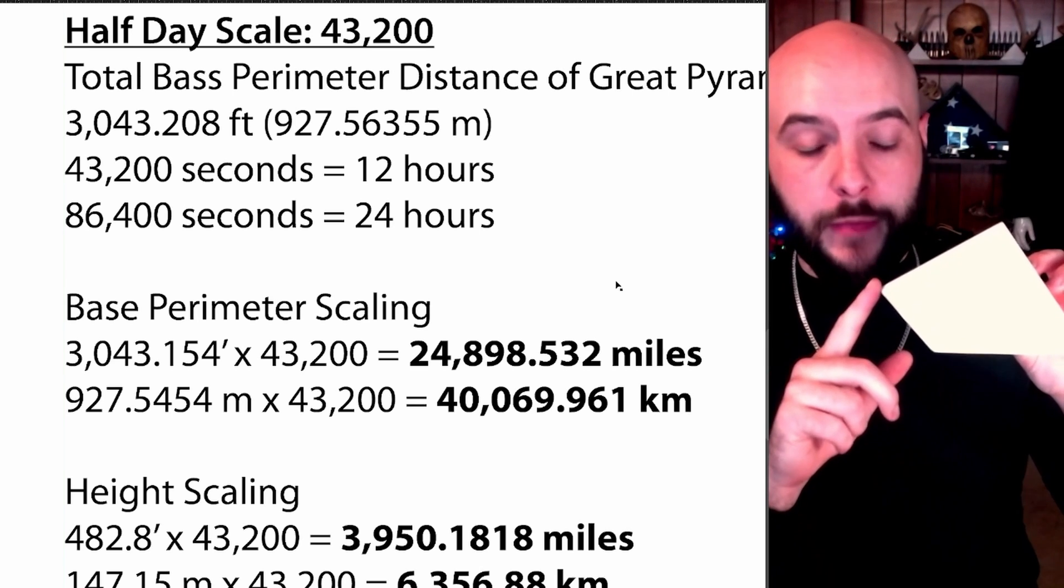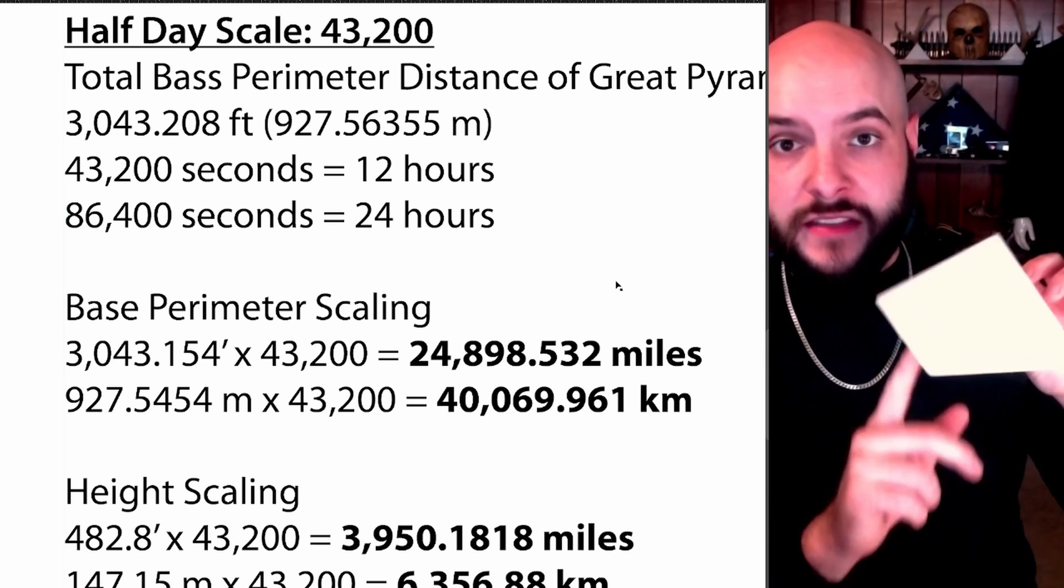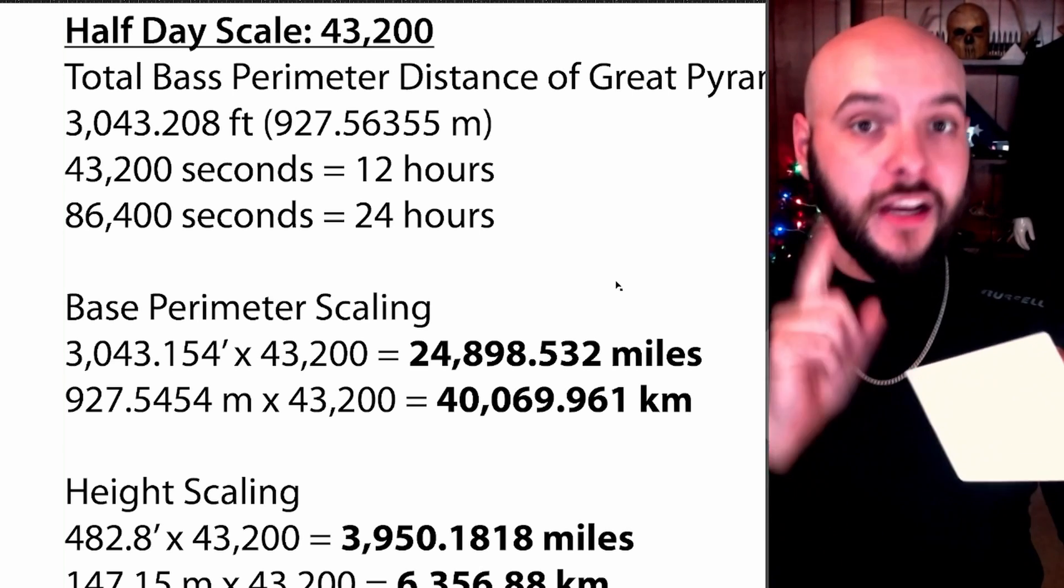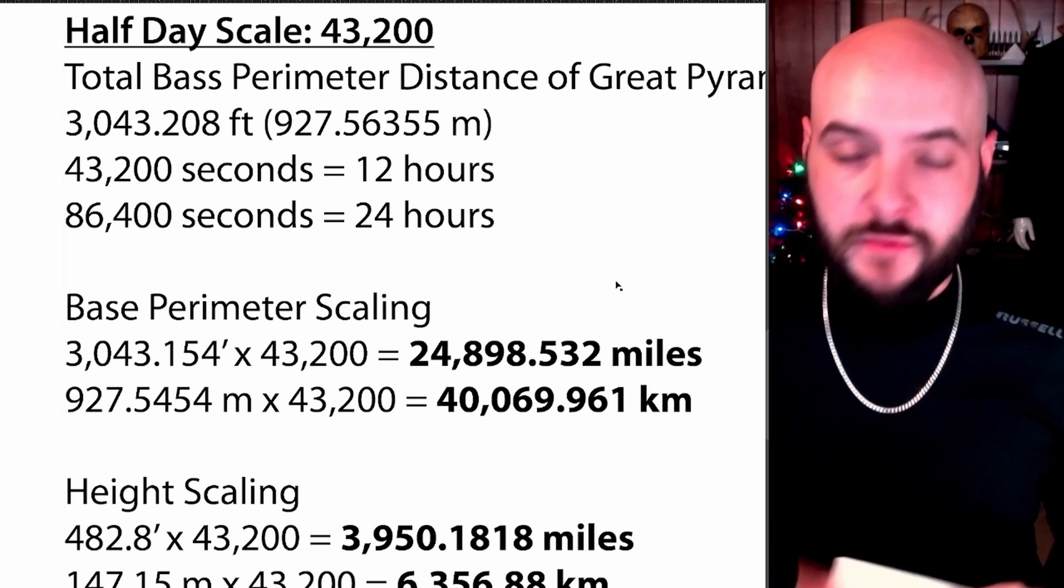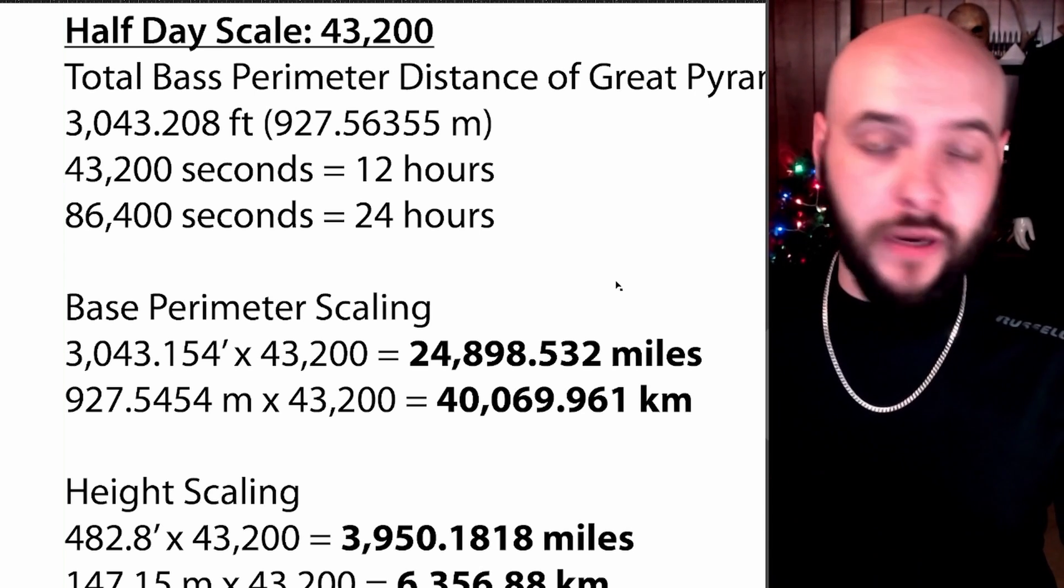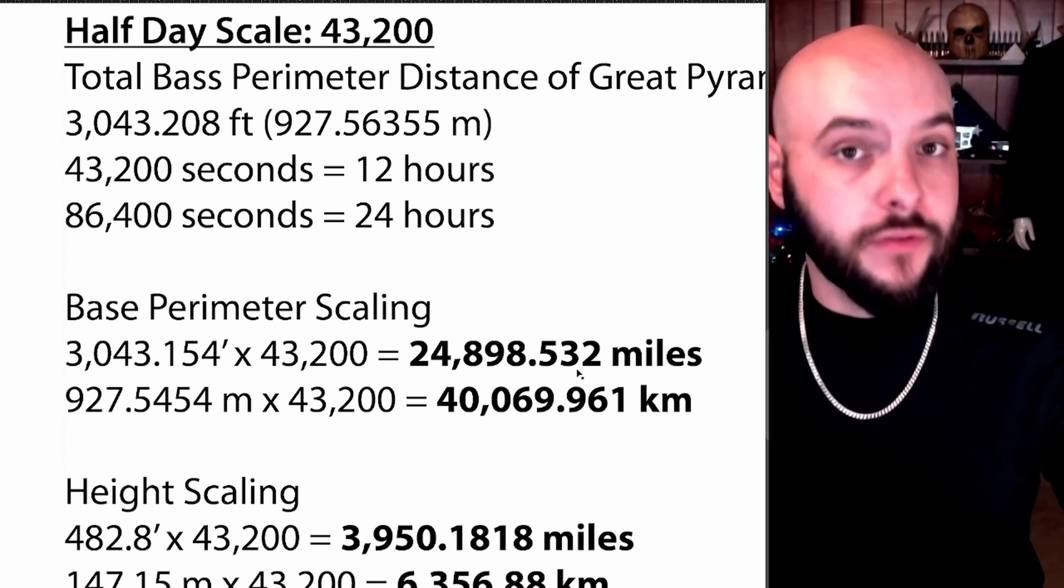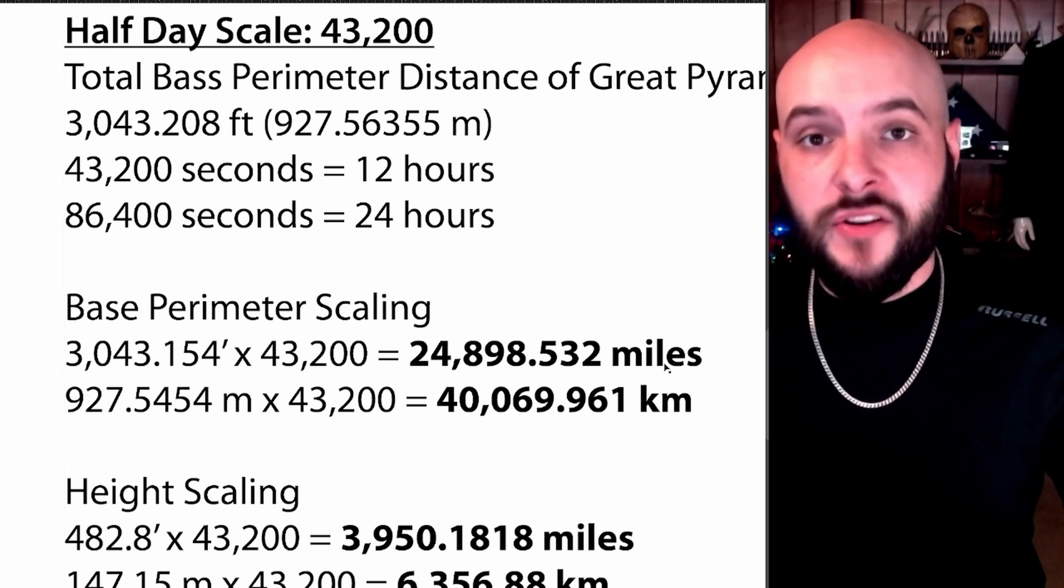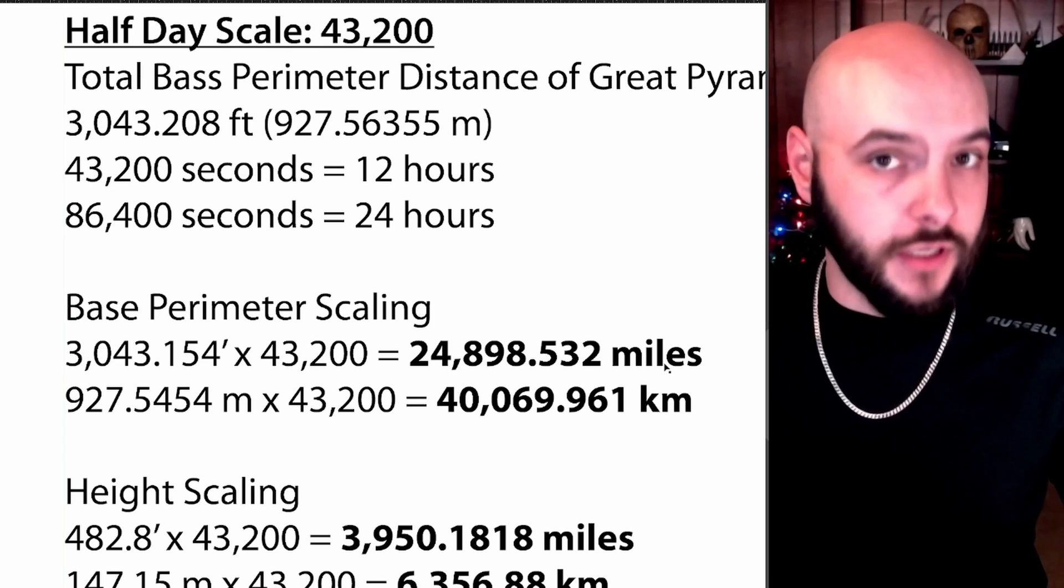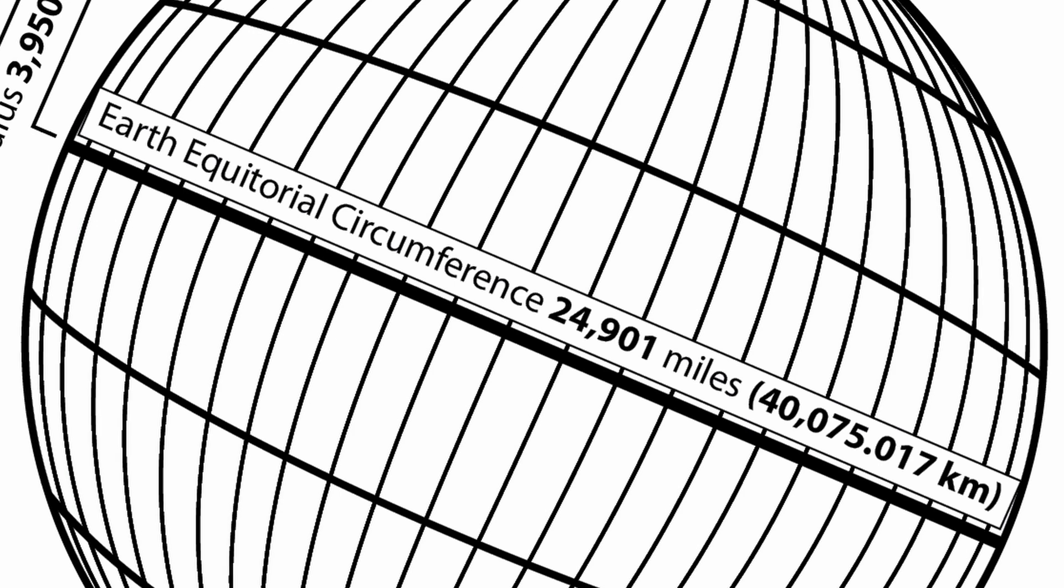Now there are 43,200 seconds in 12 hours and 86,400 seconds in 24 hours. Now let's imagine we could take the Great Pyramid with its corner socket stones and socle and scale that entire structure up 43,200 times, making a giant pyramid. The perimeter around that giant pyramid is now 24,898.532 miles or 40,069.961 kilometers, which by the way is extremely close to the equatorial circumference of the planet.